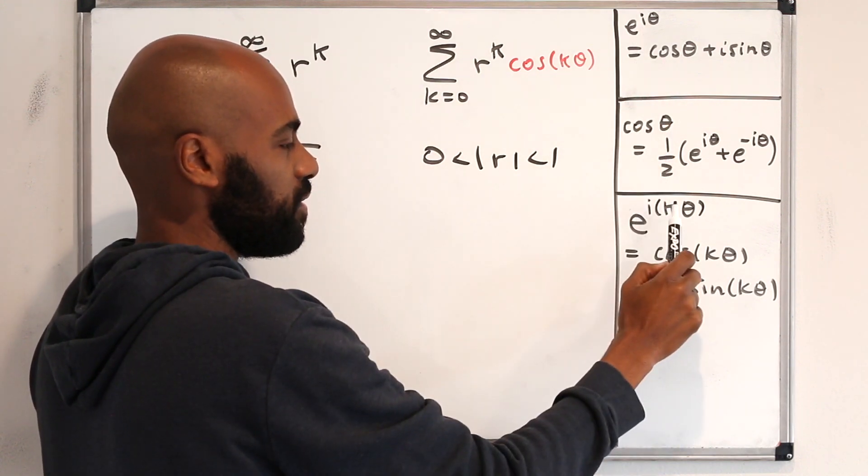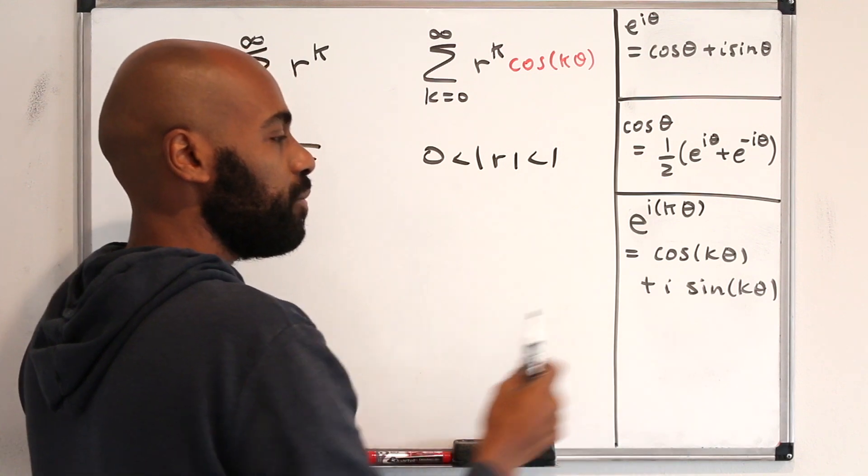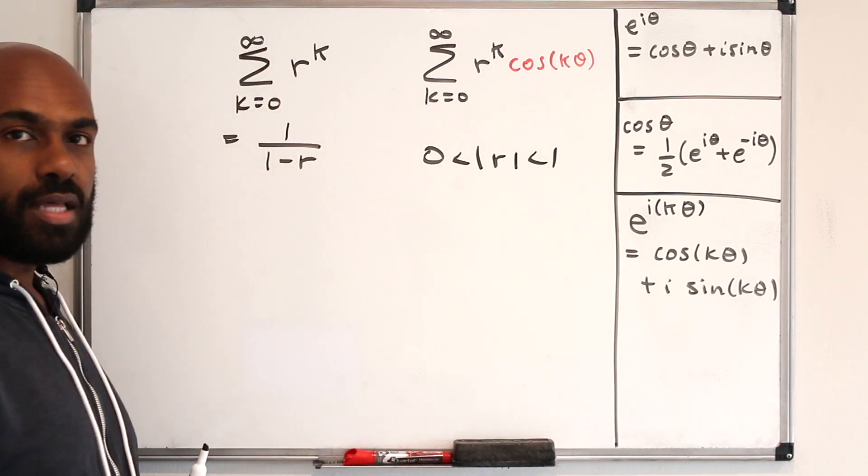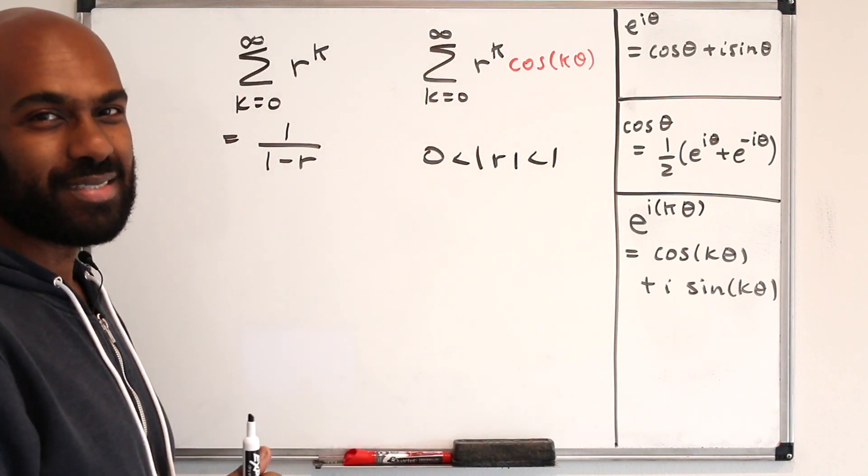a recognition that if you raise this number to the k, it is actually the complex number of cosine k theta plus i sine k theta, and that's called De Moivre's theorem. So if you want to play around with these ideas, that might help in this process.